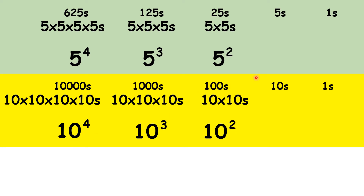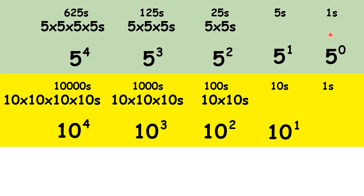One other thing you'll learn about powers is that any number to the power of 1 is just itself. So we can have 5 to the power of 1 and 10 to the power of 1 for our second place value columns. Another thing you'll learn is that any number to the power of 0 is 1, so we can have 5 to the power of 0 and 10 to the power of 0 instead of our units. And if you understand this, you'll understand place value outside of base 10.